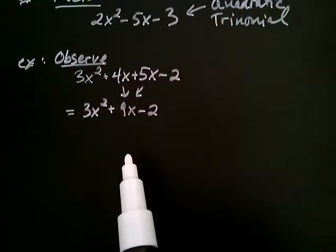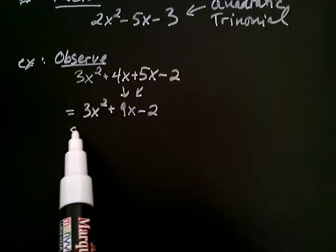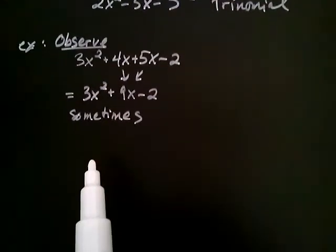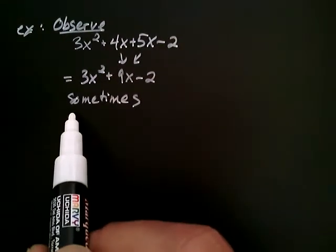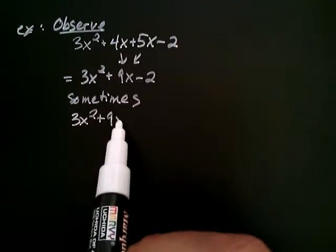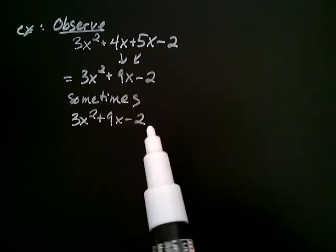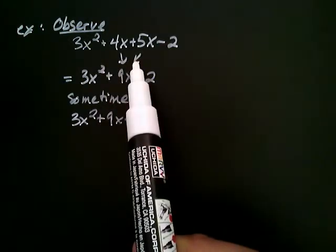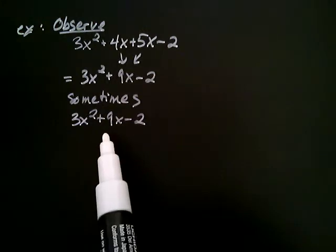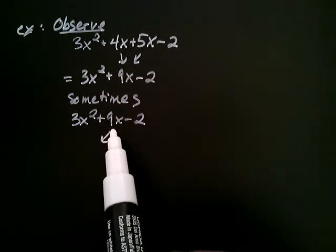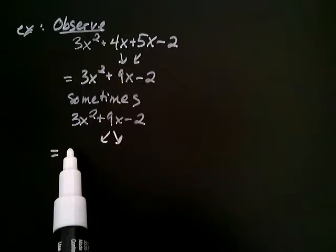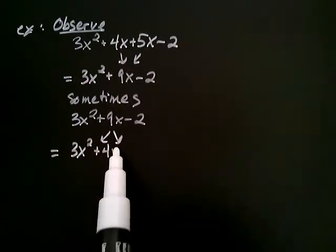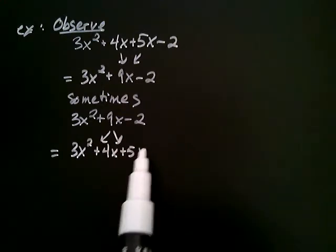The first observation that we want to make is that sometimes, and right now we just want to observe that it's possible, sometimes you actually want to take that 3x² + 9x - 2, and you want to do the reverse of what I just did here. That is, instead of combining the 4x and the 5x to get 9x, sometimes you actually want to split the 9x. So the 3x² will remain the same, and the 9x you might be able to write as 4x + 5x - 2.